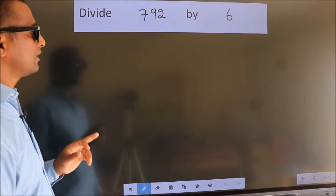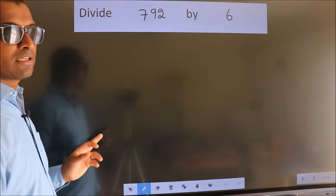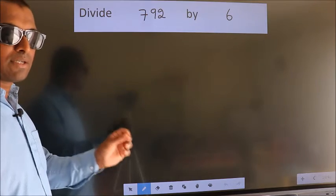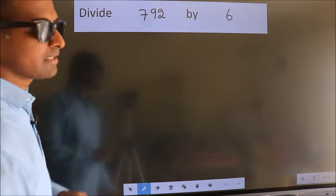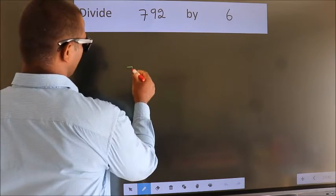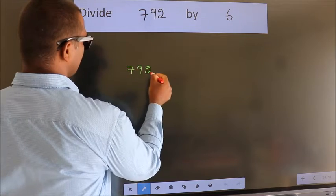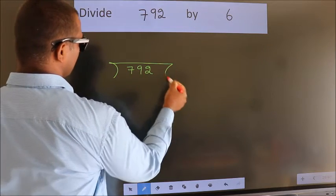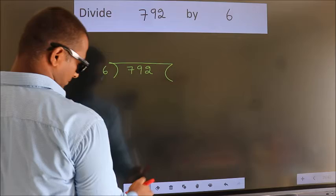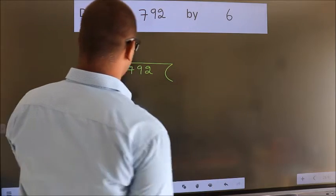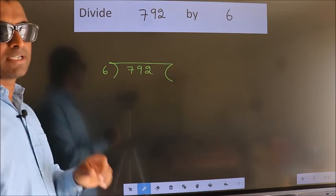Divide 792 by 6. To do this division, we should frame it in this way. 792 here, 6 here. This is your step 1.